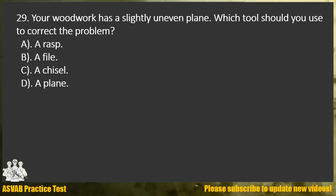Question 29. Your woodwork has a slightly uneven plane. Which tool should you use to correct the problem? A. A rasp. B. A file. C. A chisel. D. A plane.